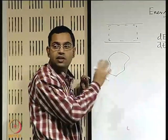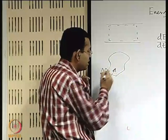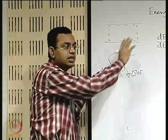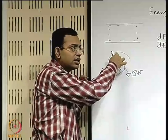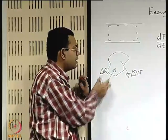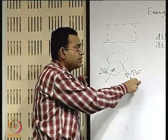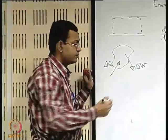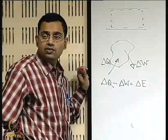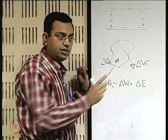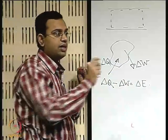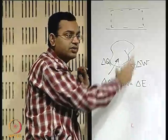The first law of thermodynamics gives: δQ − δW = change in energy of the system. Heat transfer to the system is positive; work done by the system is positive. In rate form: Q̇ − Ẇ = dE/dt of the system, which equals Q̇_CV − Ẇ_CV for the control volume in the limit as δt → 0. The control volume spans from one pipe cross-section to another through which fluid enters and leaves.